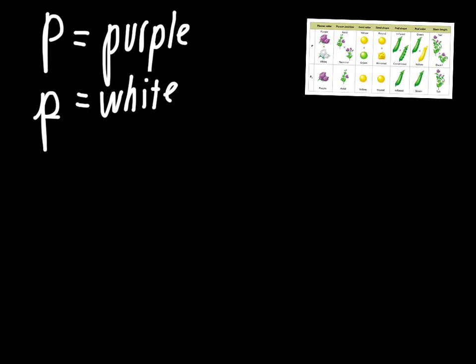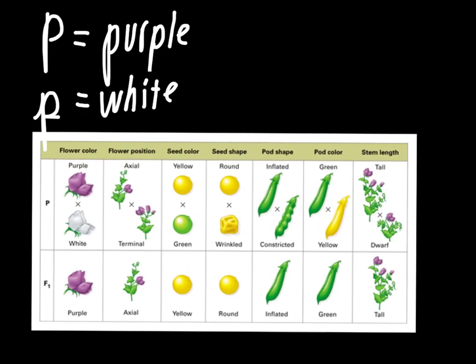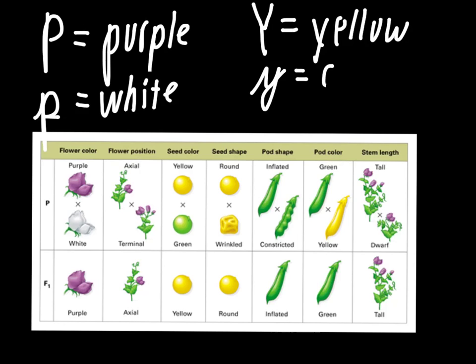In the same sense, if we go back to this one, that yellow is dominant to green. So for a yellow trait, we would represent that with a capital Y because yellow is dominant. If you look at this, if we mix yellow and green together, we get yellow. Yellow is dominant, so capital Y would represent yellow. Lowercase y then represents green.